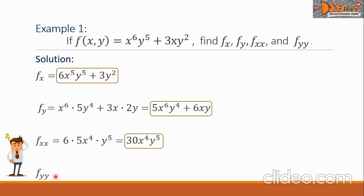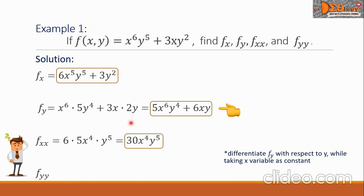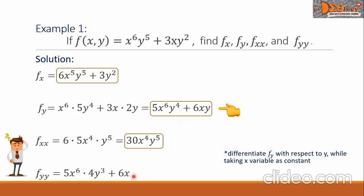Last is f sub yy. We are going to differentiate the function f sub y with respect to y, taking x as constant. So the derivative is 5x raised to 6 — treated as constant — times the derivative of y raised to 4, which is 4y cubed, plus the derivative of 6xy with respect to y, which gives 6x. Simplifying, we have 20x raised to 6 times y cubed, plus 6x. This is the final answer.